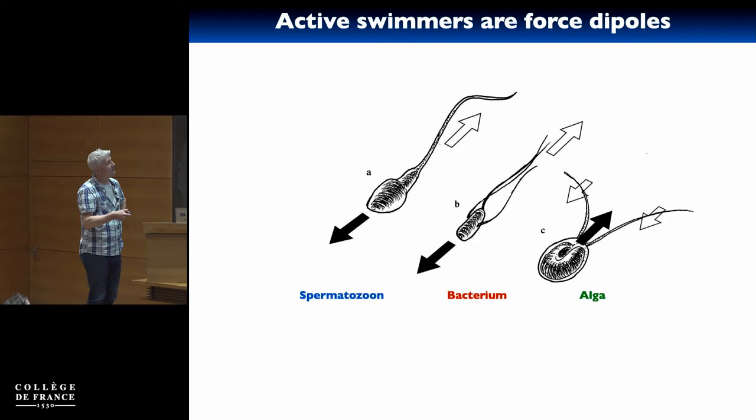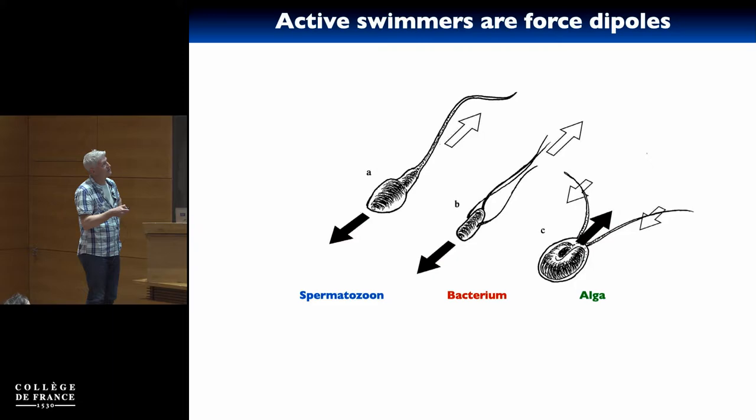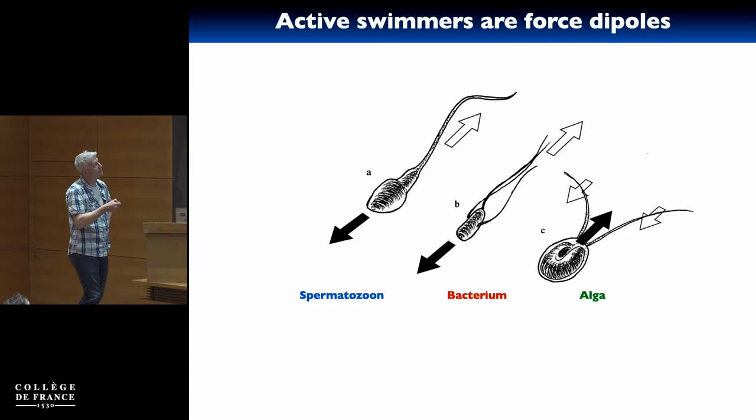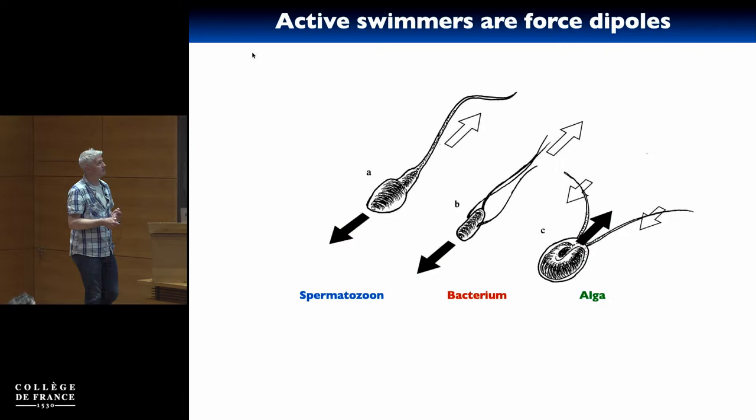Same thing for a sperm cell. In the algae, it's a little different — you have two flagella, so the propelling forces can be thought of as one half on each side. The big difference is that the sign of the arrows is flipped: those two arrows are pointing away from one another, while that one goes the other way. So actually, the flows created by algae are kind of the instantaneous reversal of flows created by bacteria. This is meant to justify intuitively why you have dipoles.